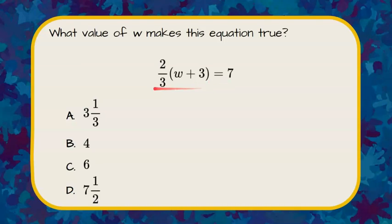So first we need to clear the parentheses, which means we need to distribute. We're going to multiply two-thirds times W and two-thirds times the value 3. So we're distributing the two-thirds to both terms inside the parentheses.